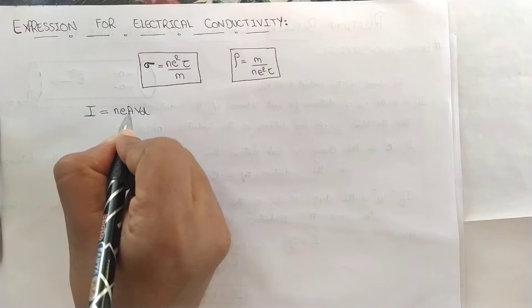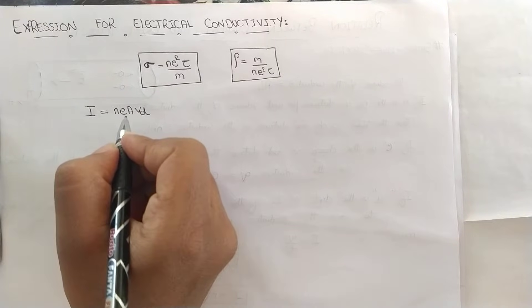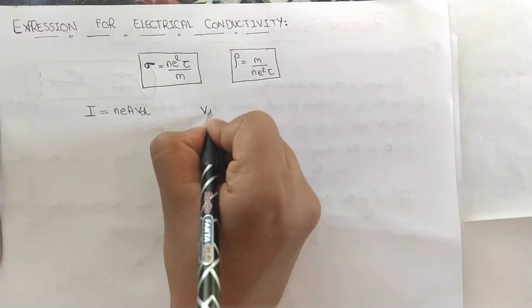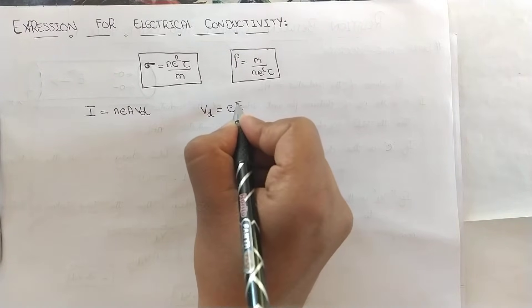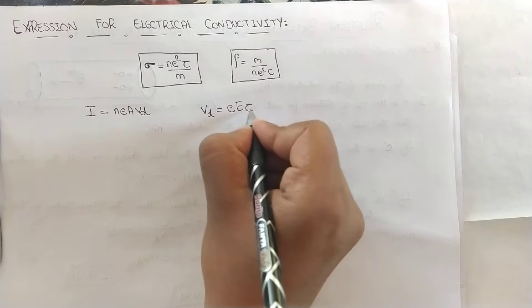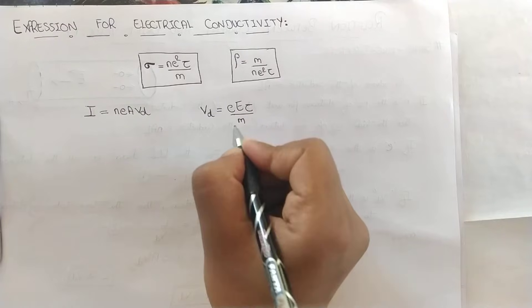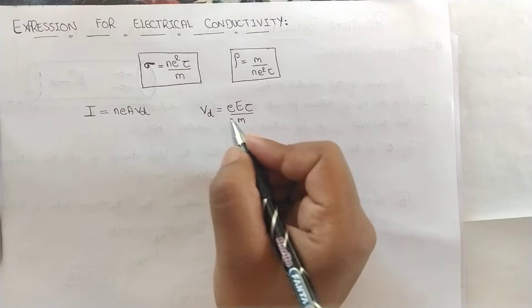Now we have drift velocity VD as E the charge multiplied by electric field applied multiplied by tau divided by M. This is also an expression for drift velocity.